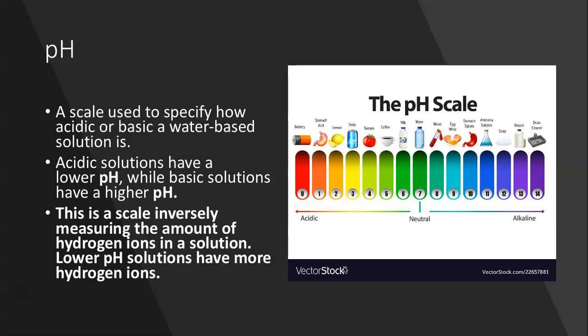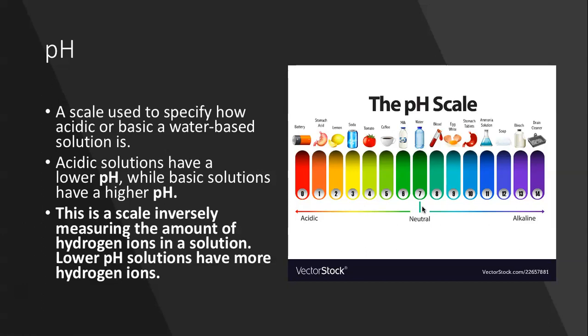The next abiotic factor is the pH scale. The pH scale goes from 0 to 14, where numbers close to 0 are acidic, numbers close to 14 are called basic, and somewhere right in the middle — about 7 — is called neutral. A pH scale is used to specify how acidic or basic some sort of solution is.